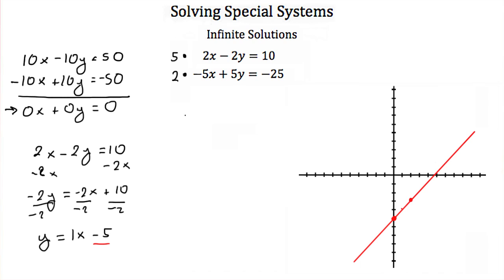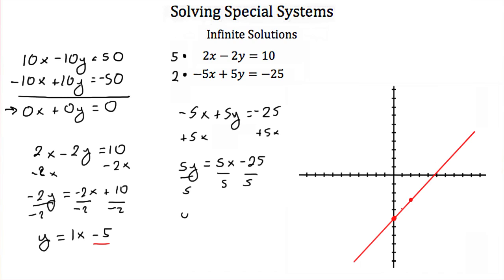For our second equation, negative 5x plus 5y equals negative 25, I add 5x to both sides to get 5y equals 5x minus 25, then divide by 5. We get y equals 1x minus 5 — that's the same equation we had before. If I graph this second line, I'm just going to draw it right on top of the first one. So these two equations are actually the same equation, meaning every point in the first equation is also a point in the second. We say this system has infinite solutions.